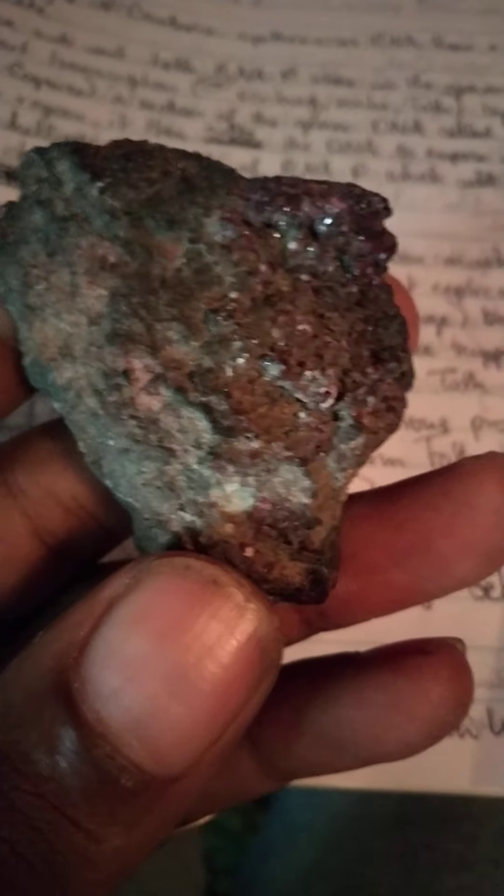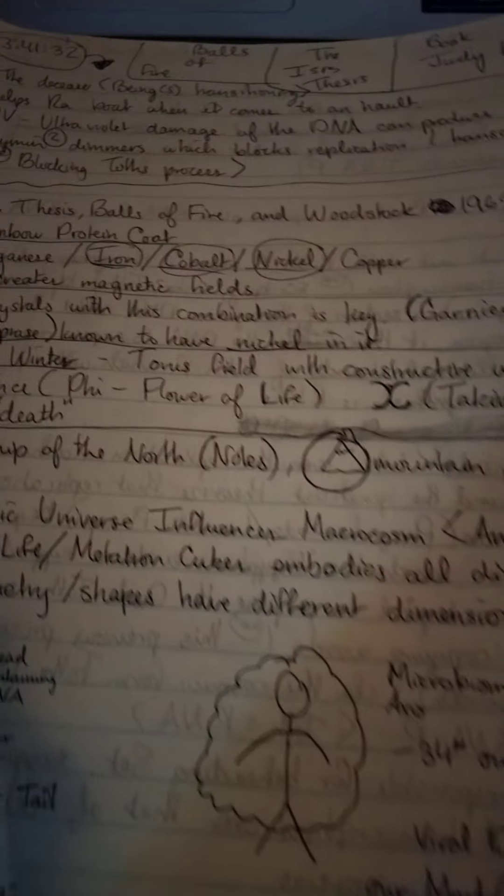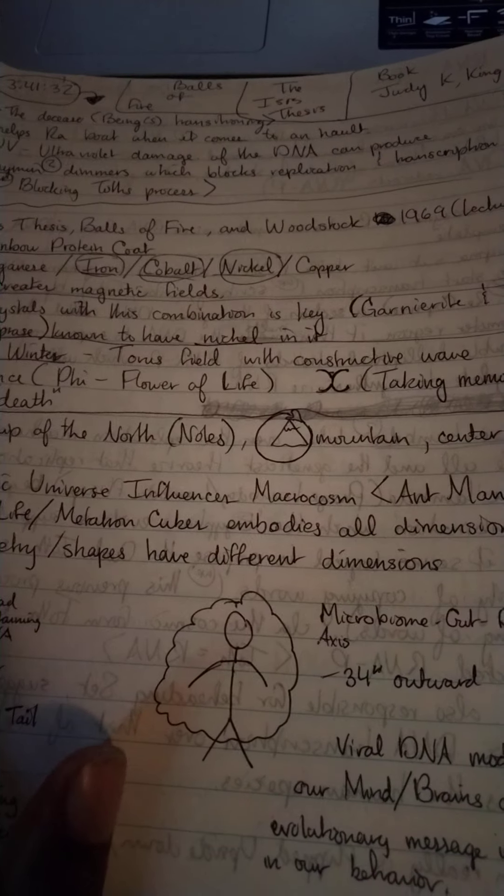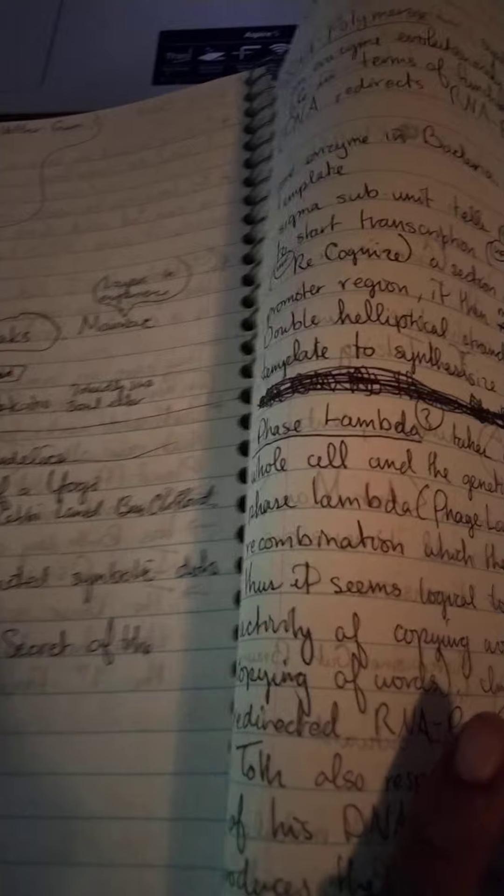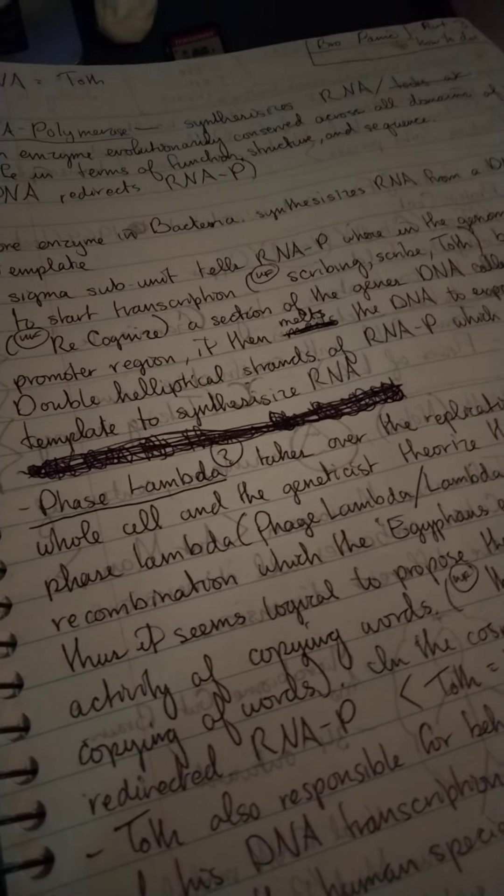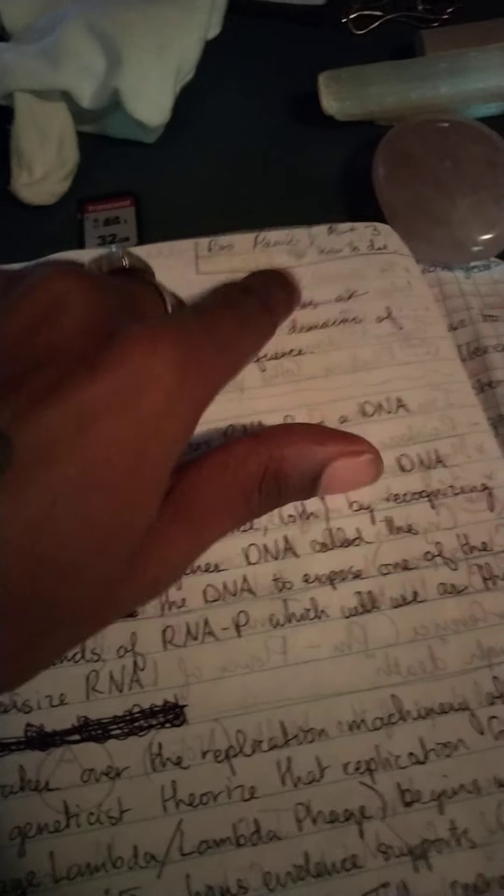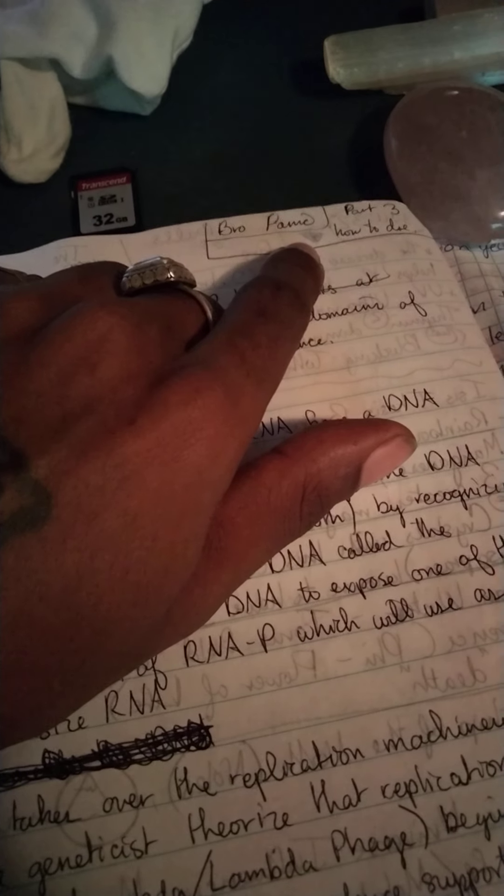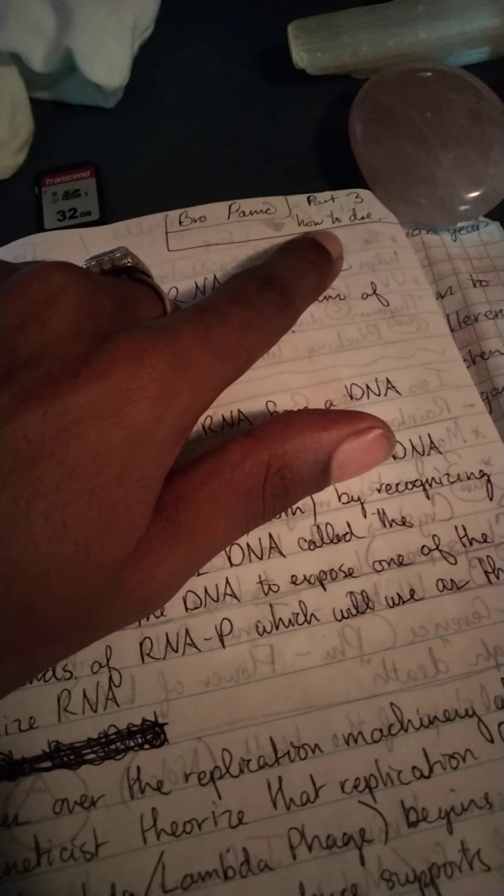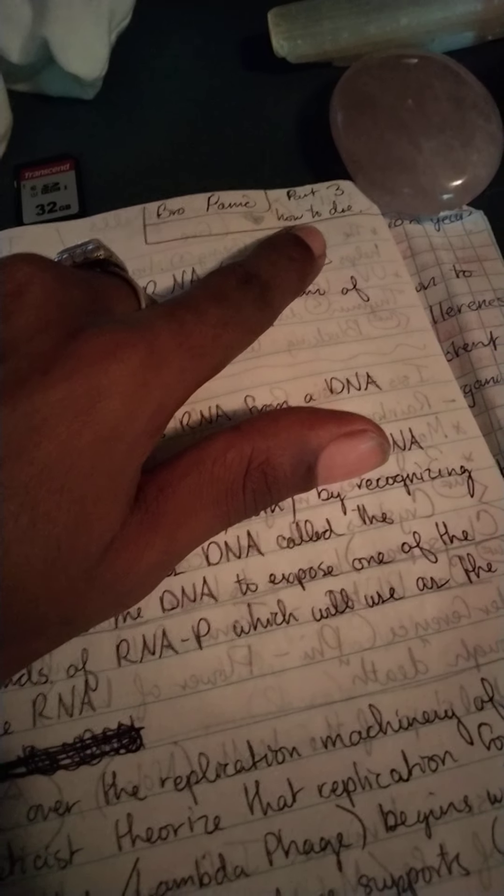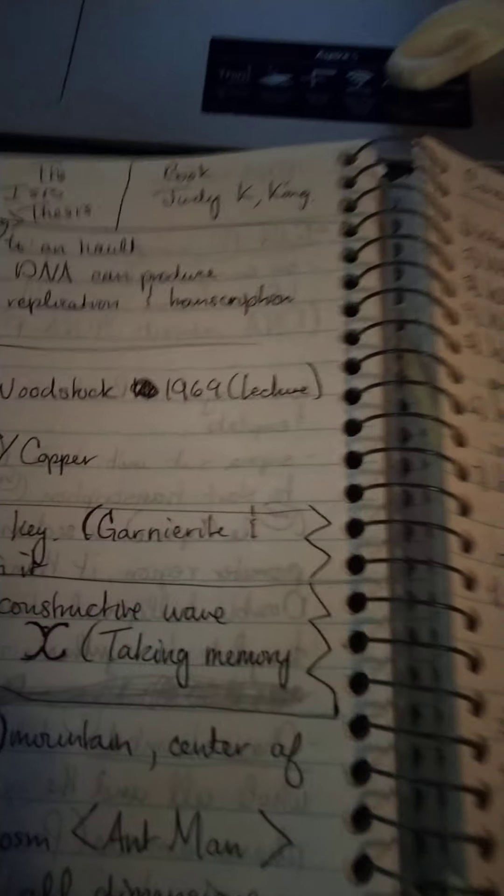As a precursor to what I'm about to talk about, go check out Brother Panic video on occult lectures, his video about how to die, part one, part two, and part three, and he brings up Judy K. King.